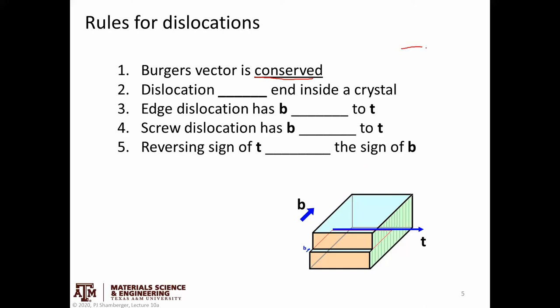Even if my dislocation is a big curly loop, the Burgers vector is fixed at constant magnitude and constant direction anywhere along that dislocation. So dislocations cannot end by themselves inside a crystal.